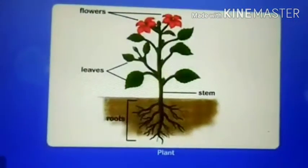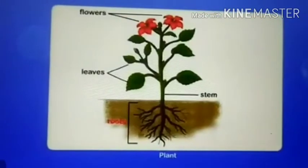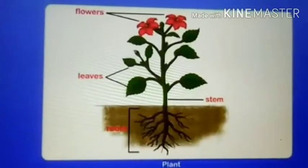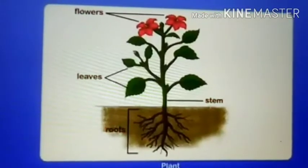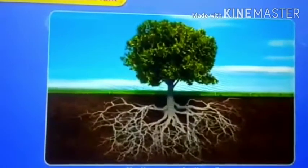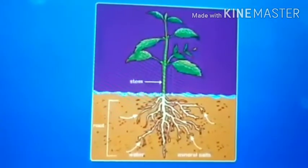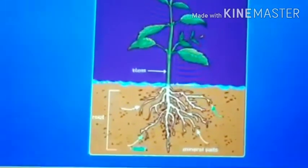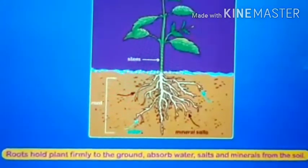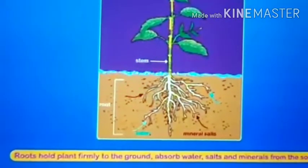A plant consists of four parts: roots, stem, leaves, and flowers. Each part plays an important role. The different parts of a plant — roots of a plant mostly grow under the soil. The roots hold the plant firmly to the ground, absorb water, salts, minerals, and other nutrients from the soil, and transport these up to the stem of the plant.